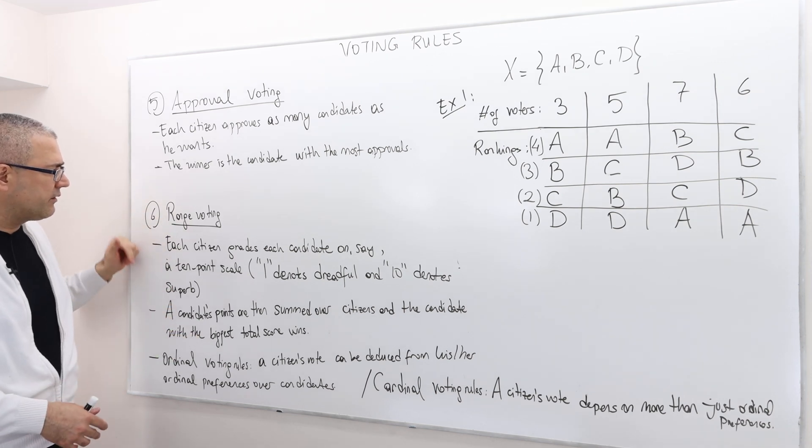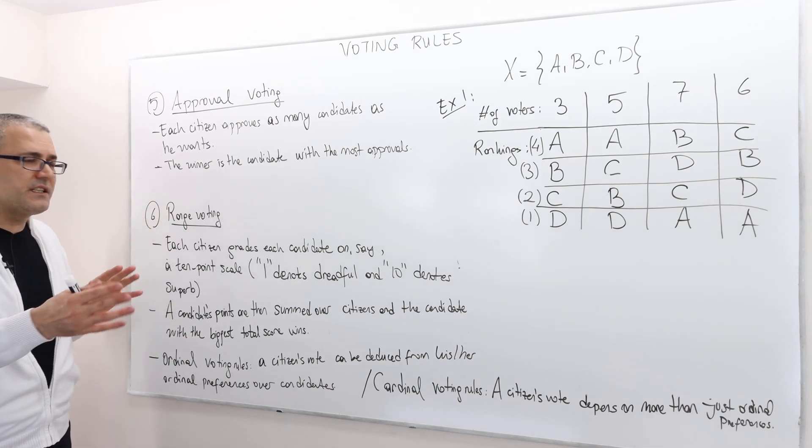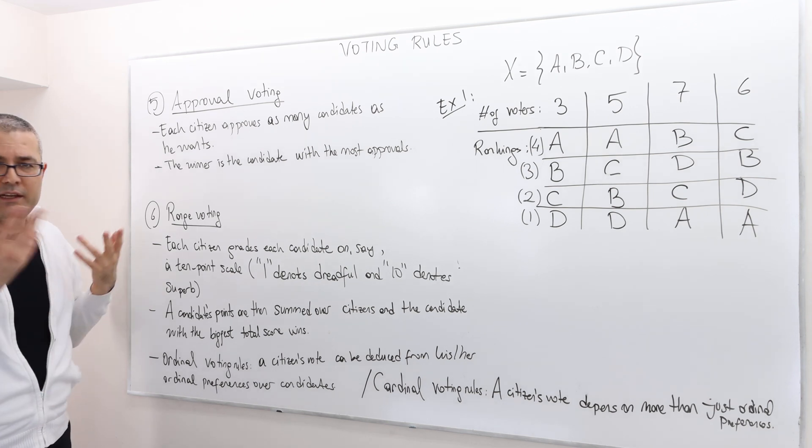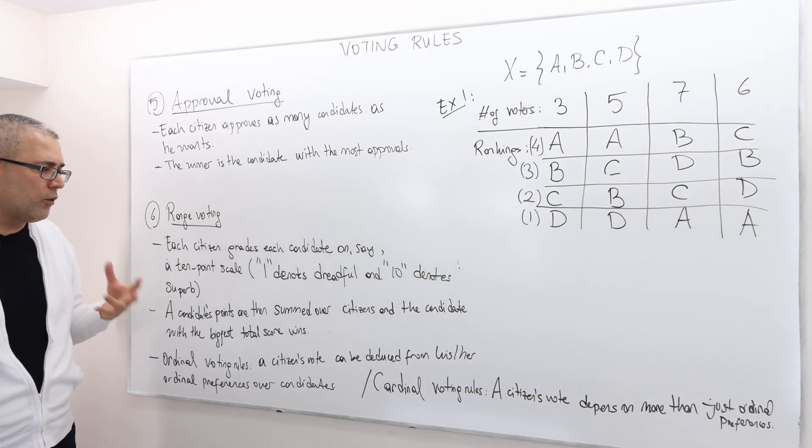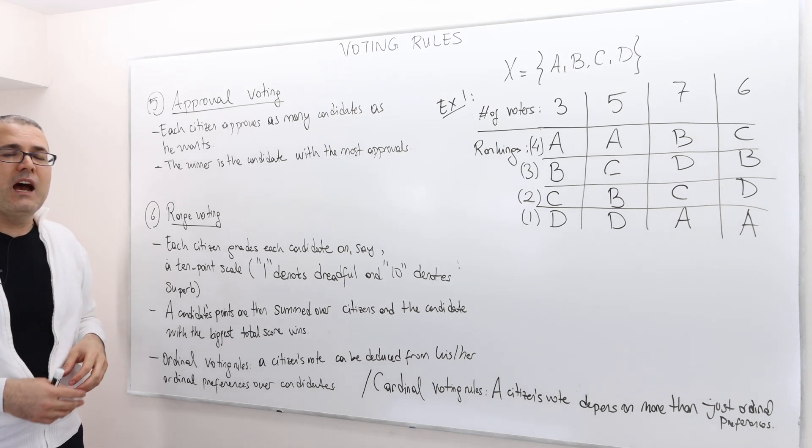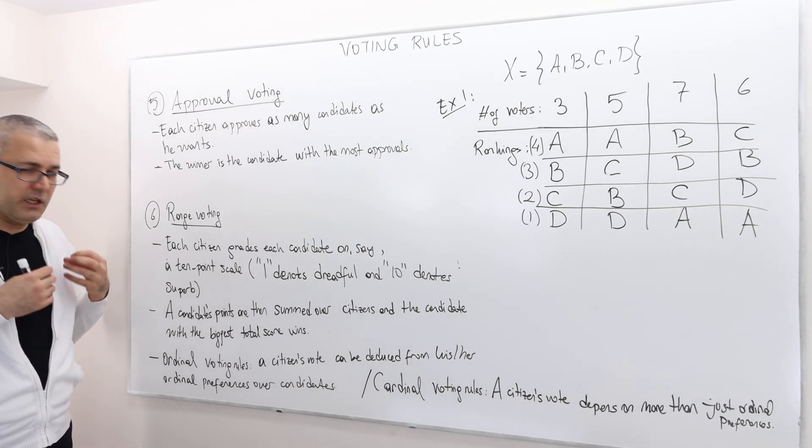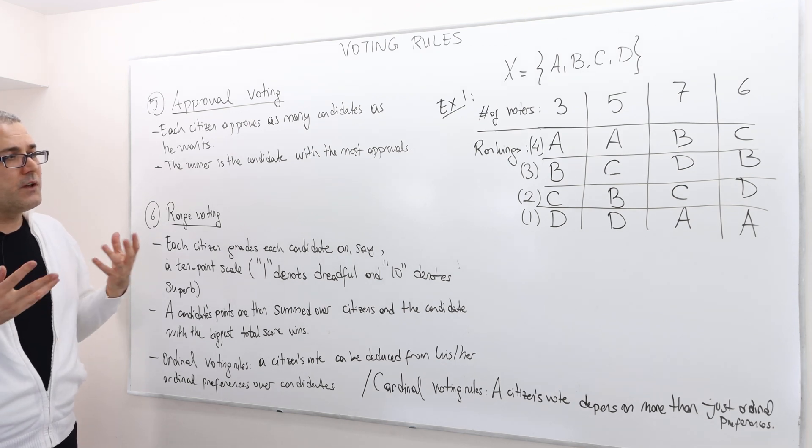If I need to continue the range voting, again, as I said, each citizen grades each candidate on a, say, 10 point scale. A candidate's points are then summed over citizens, and the candidate with the highest score actually wins. So that's it.